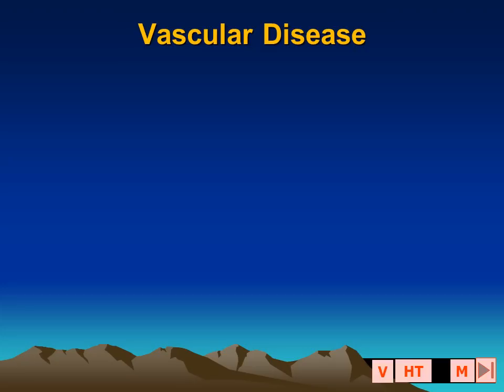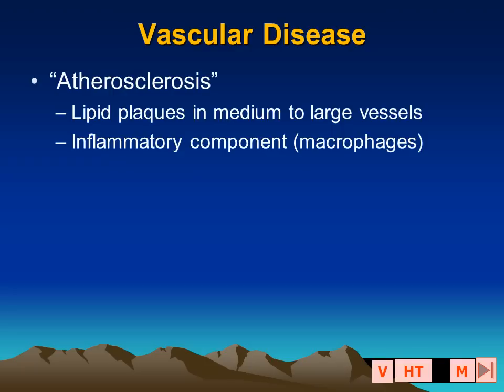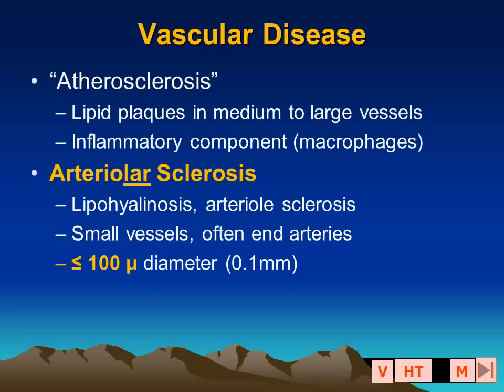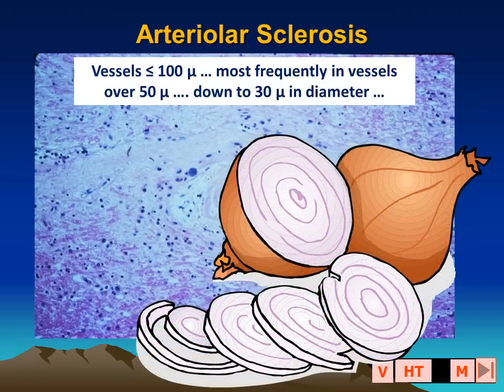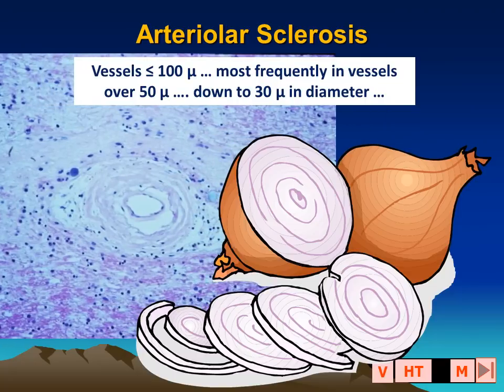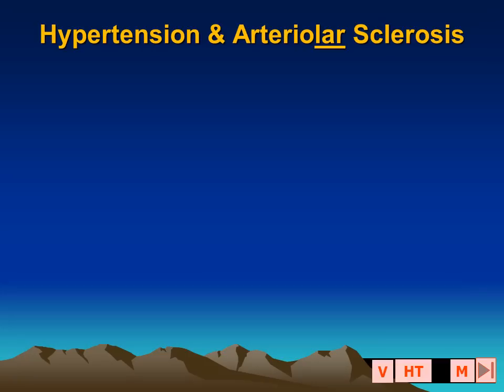The disease that occurs with long-standing hypertension affects very small arteries with a caliber typically less than 300 microns. The pathologic changes consist of the accumulation of lipohyalinosis and thickening of the small vessel walls, most commonly seen in vessels under 100 microns in diameter. In this high-power histologic view, we can see the onion skin thickening surrounding the lumen of this small vessel, which is the classic appearance of lipohyalinosis or arteriolar sclerosis common with hypertension.